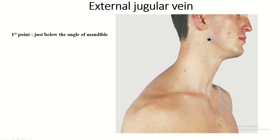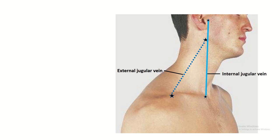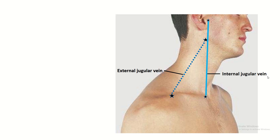Surface anatomy of the external jugular vein: first point just below the angle of the mandible, second point at the midpoint of the clavicle. Join these points. These are the locations of the internal jugular vein, and this is the location of the external jugular vein.